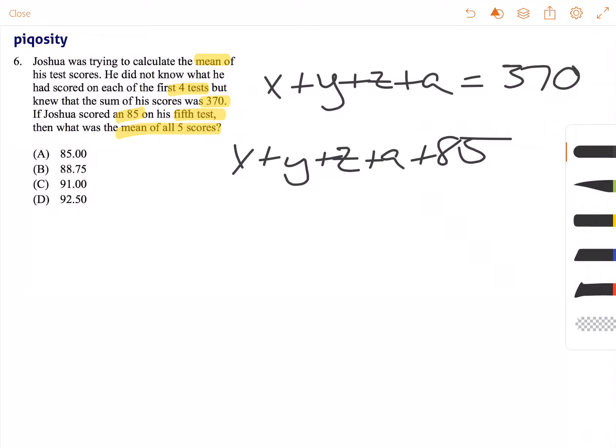But the nice thing is that we already know the value or the sum of these four unknown tests, which is 370. So we can just have 370 plus 85.